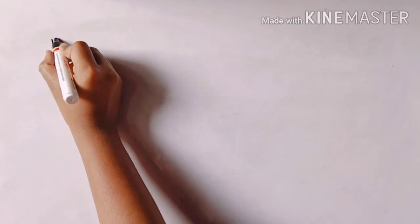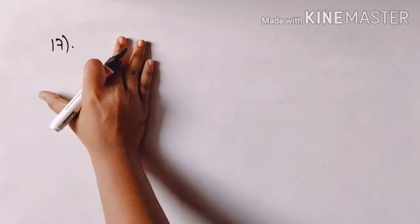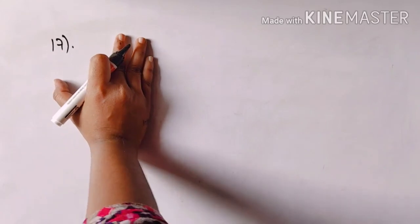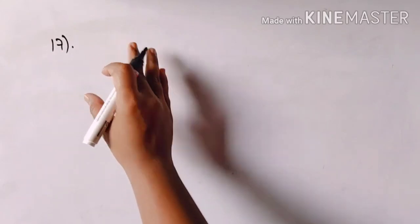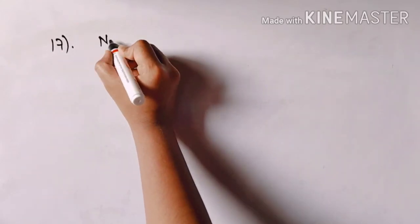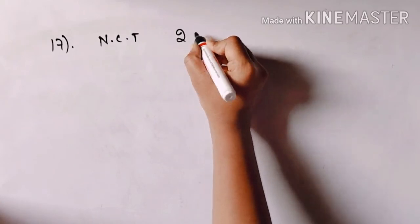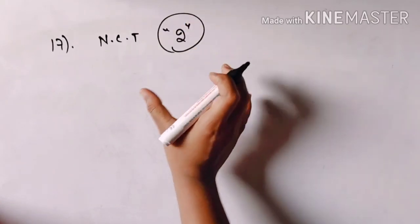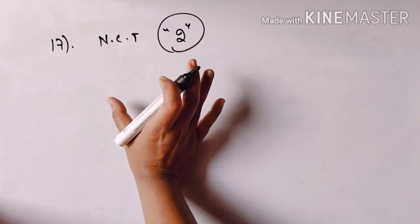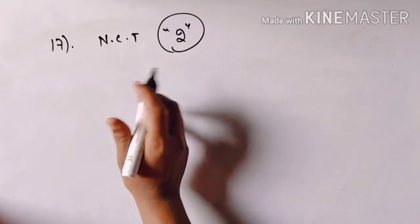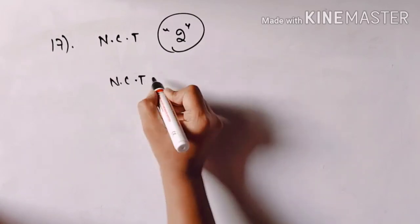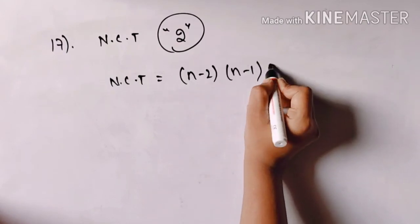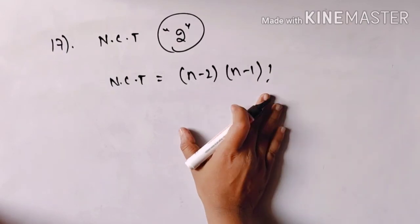Next, the 17th question. n articles are arranged in such a way that two particular articles never come together. For this never come together question, the formula is: n minus 2 into n minus 1 factorial.